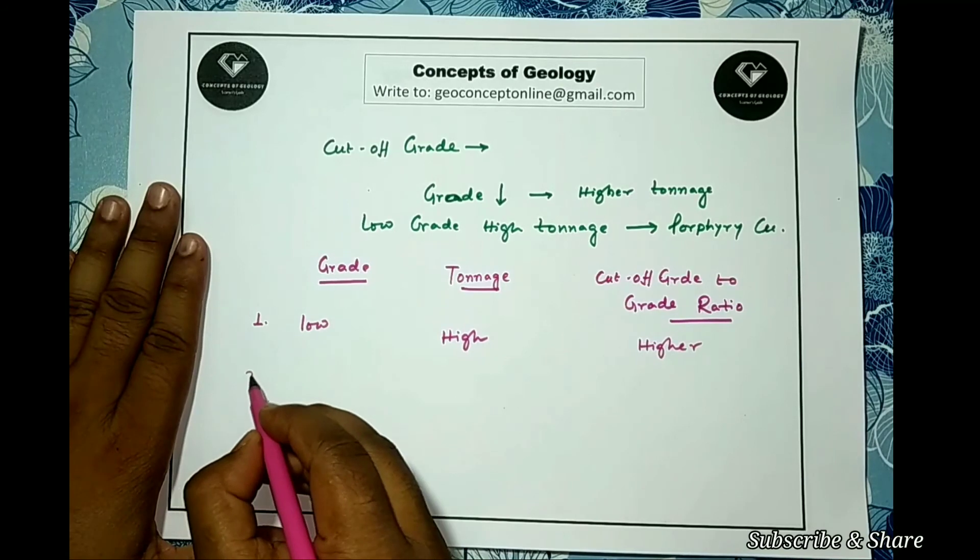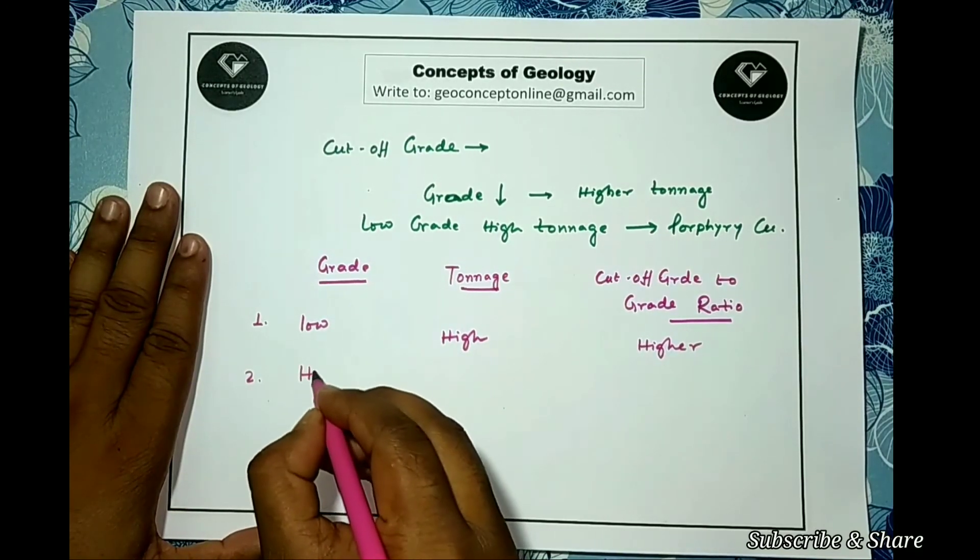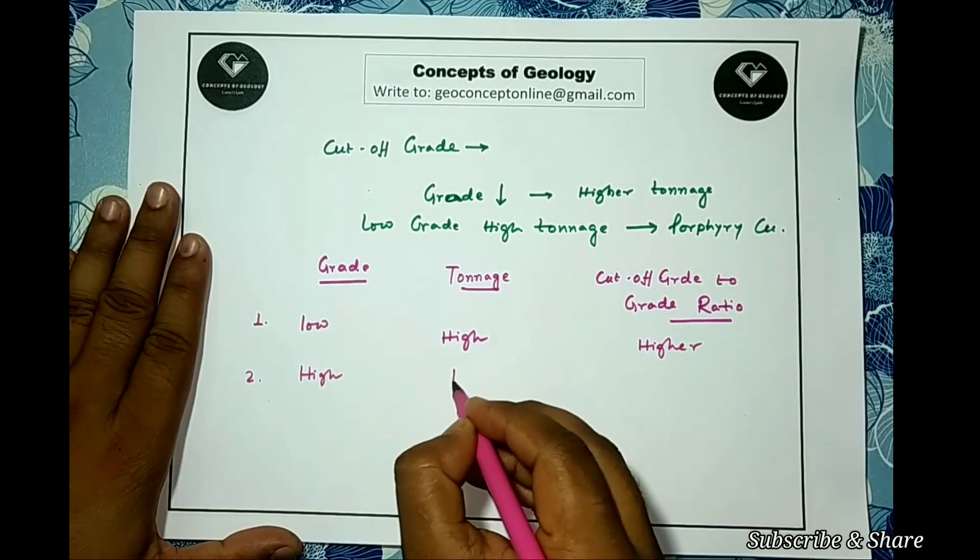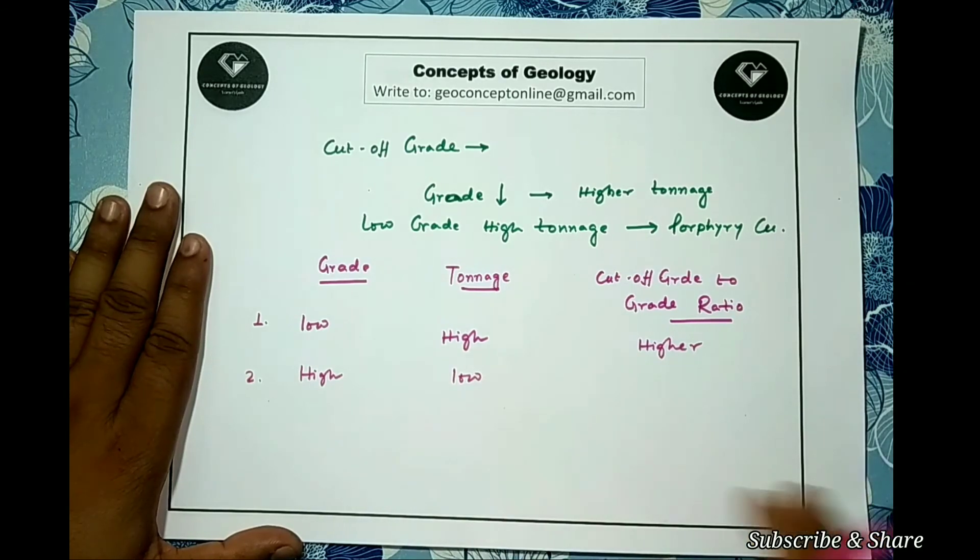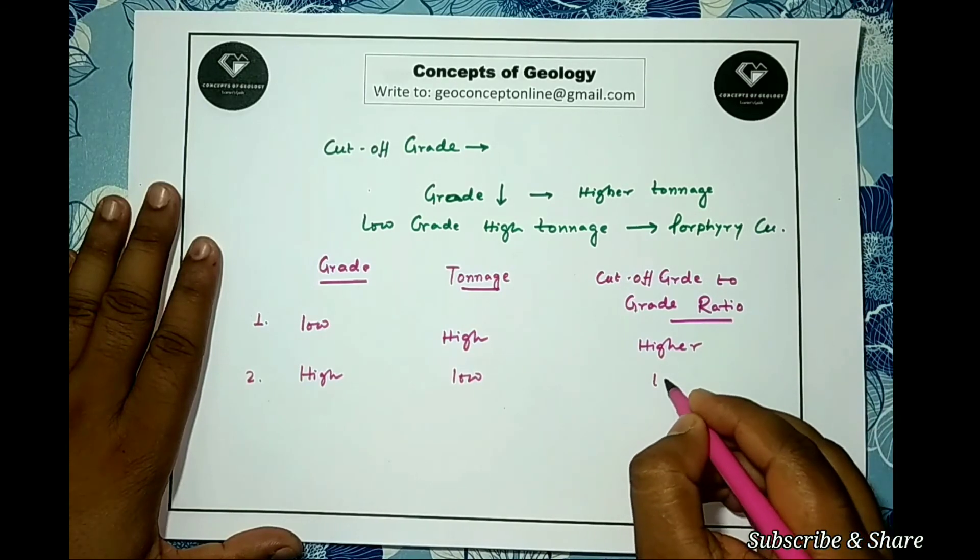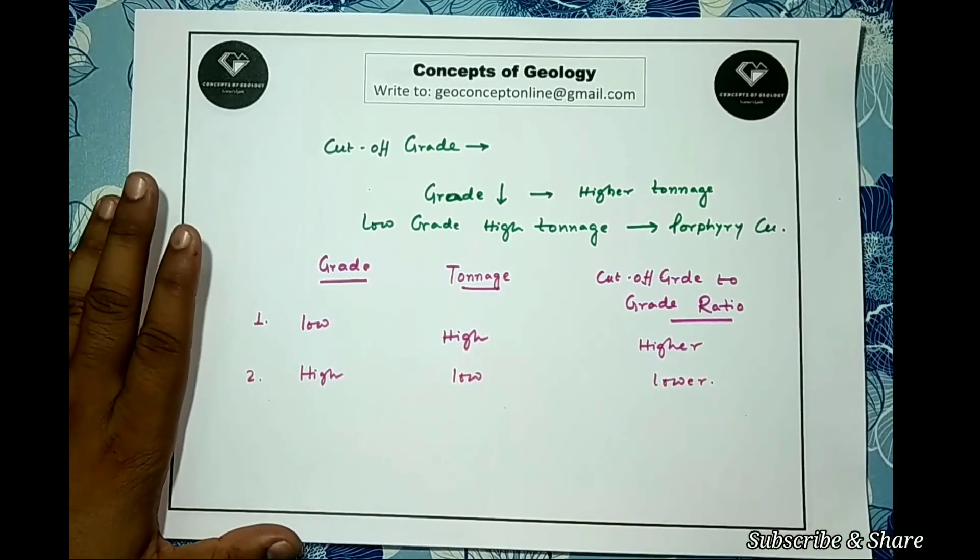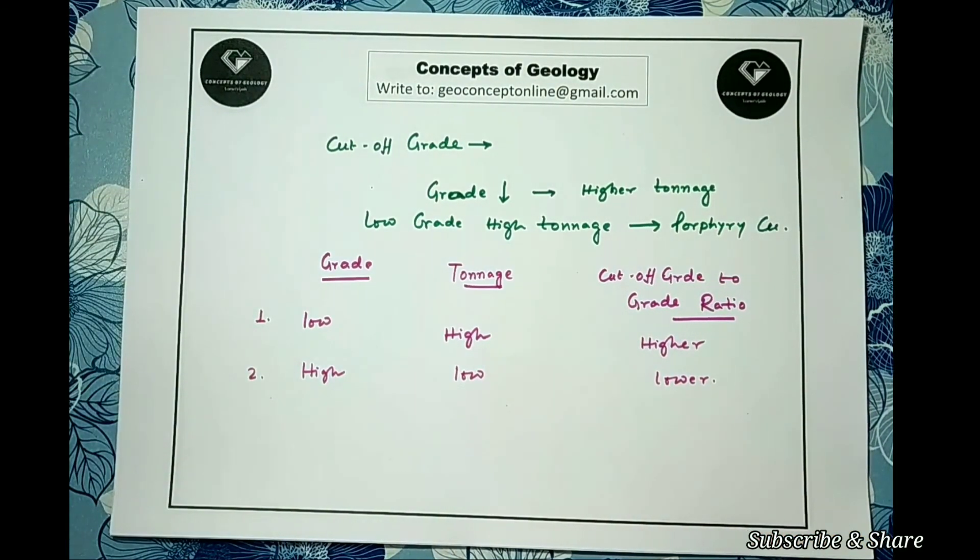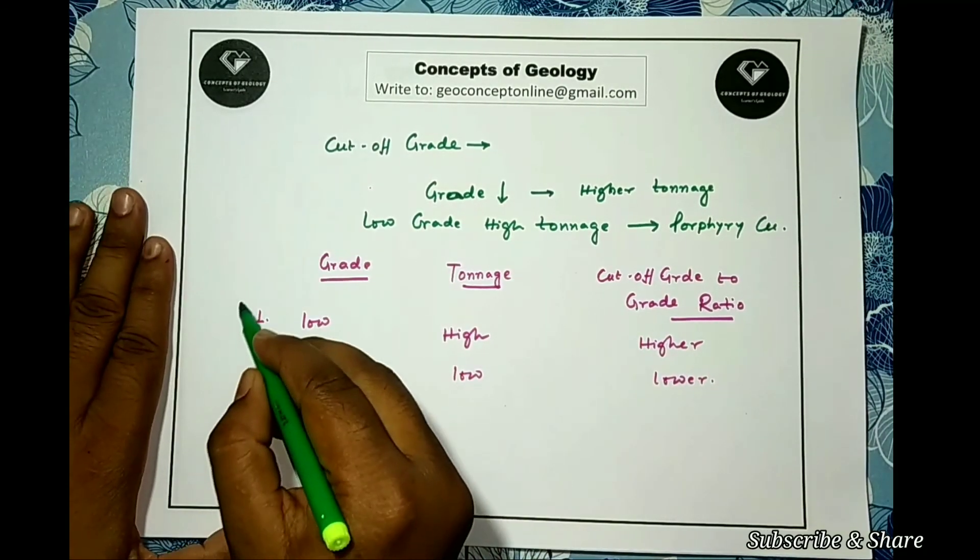Second one: my grade is high, tonnage will be low. These are called high grade low tonnage deposit, and here the cutoff grade to grade ratio will be lower. This is called grade tonnage relationship.